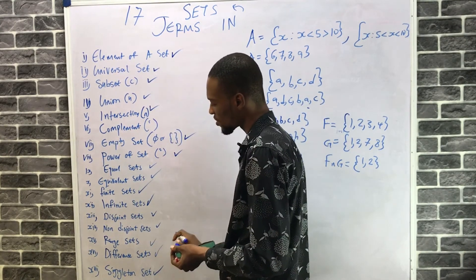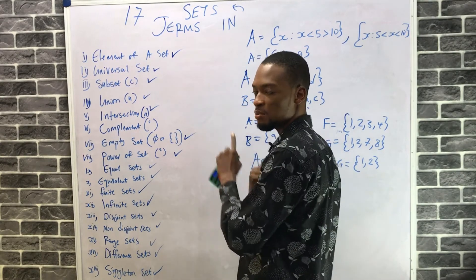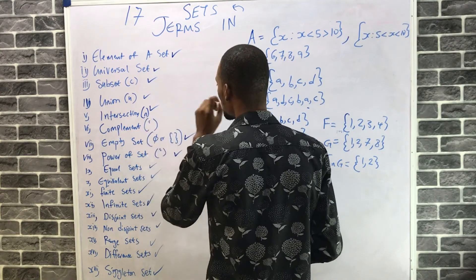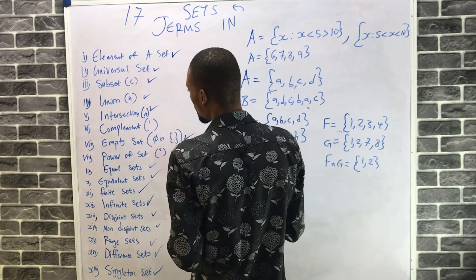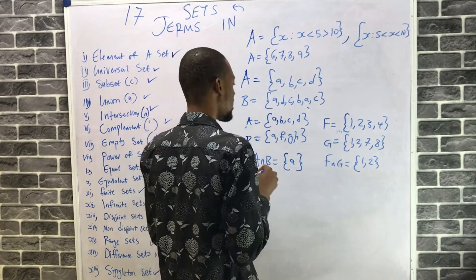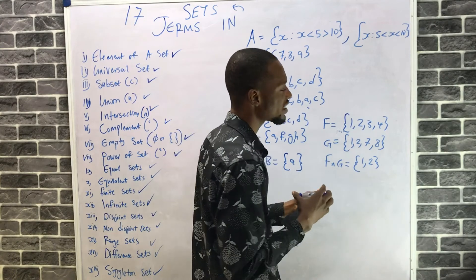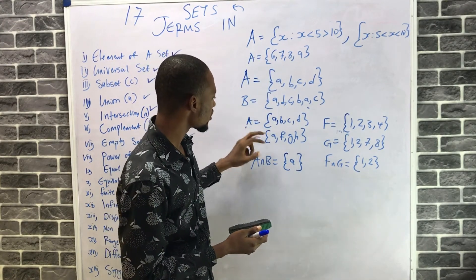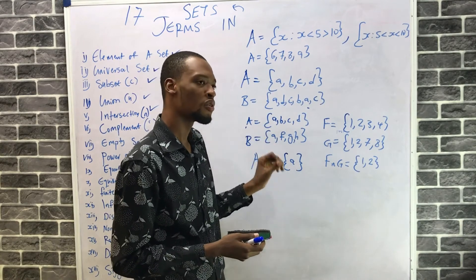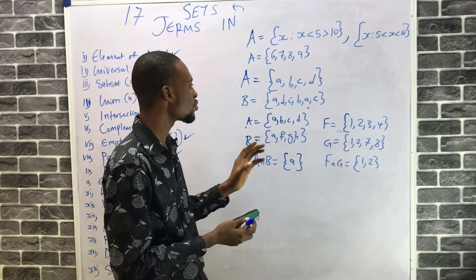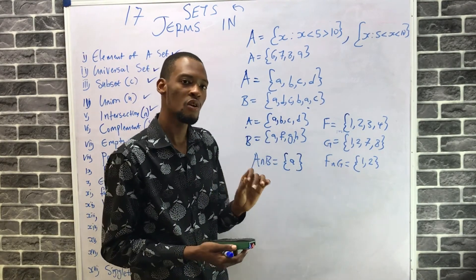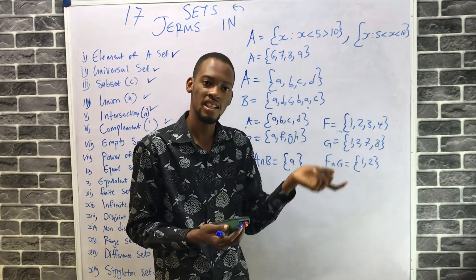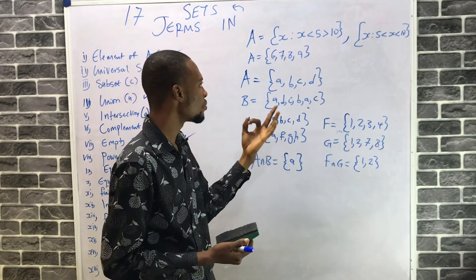Difference of sets is when you subtract set B from set A. Complement is the element that is not contained in the set — what is present in one set that is not present in the other. You can call it complement or prime.